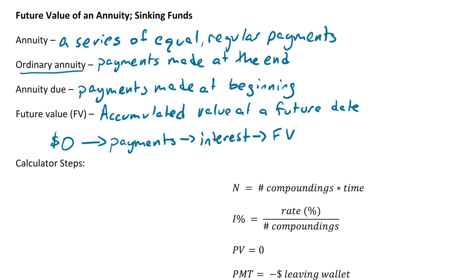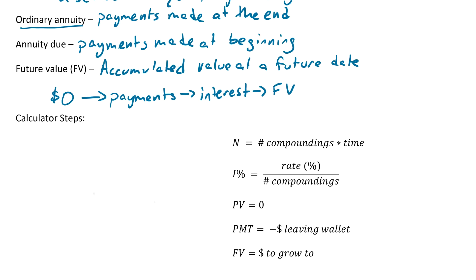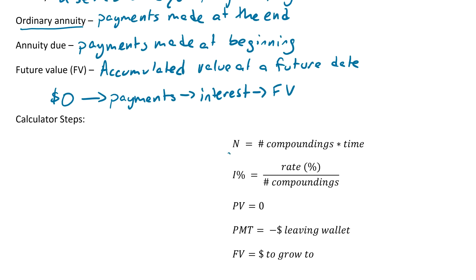We're going to use the calculator to do most of the hard work. There are five things in the calculator we'll be working with for present and future value. First, big N is the number of compoundings per year multiplied by the time. For example, if we have four compoundings per year over five years, four times five equals twenty — that would be our N.